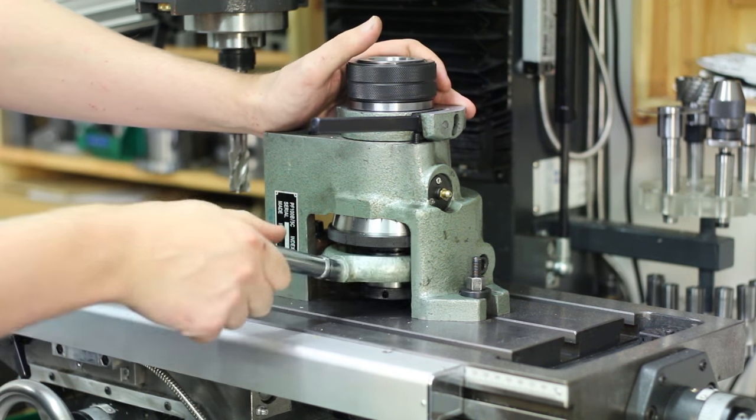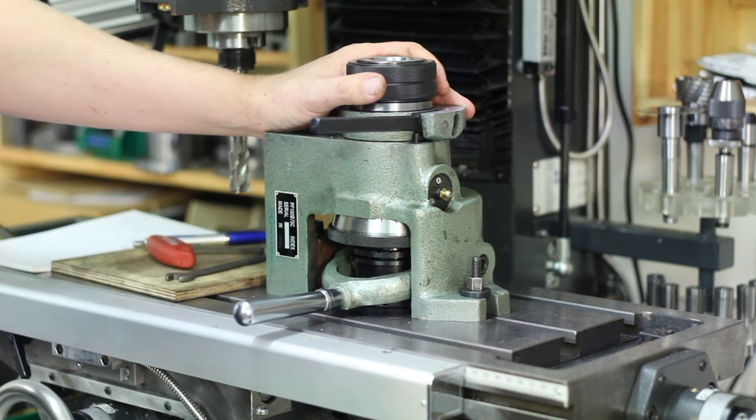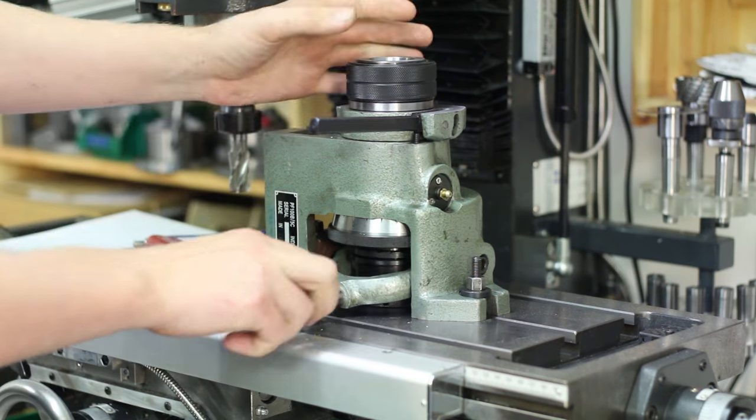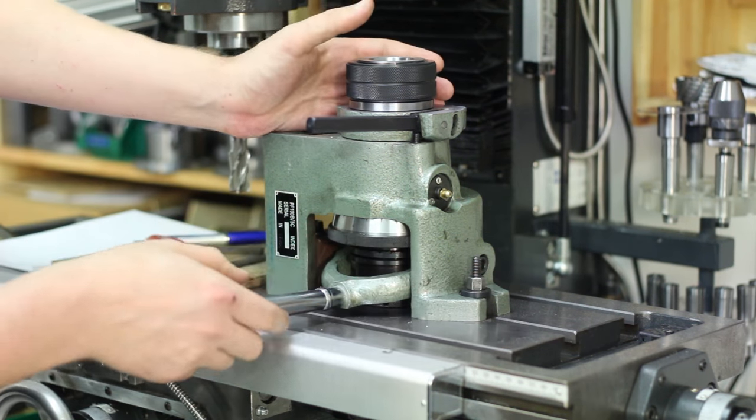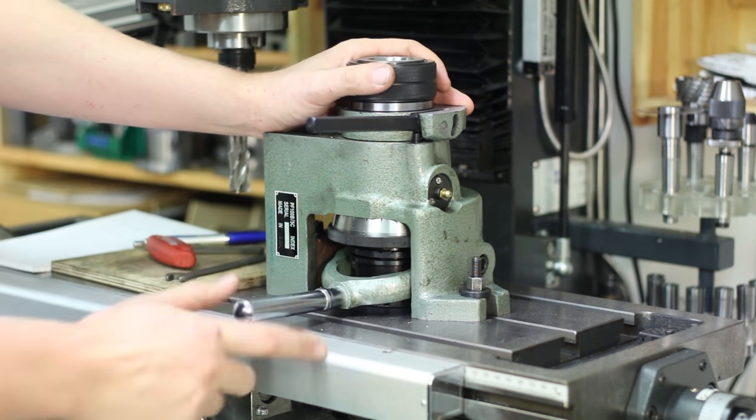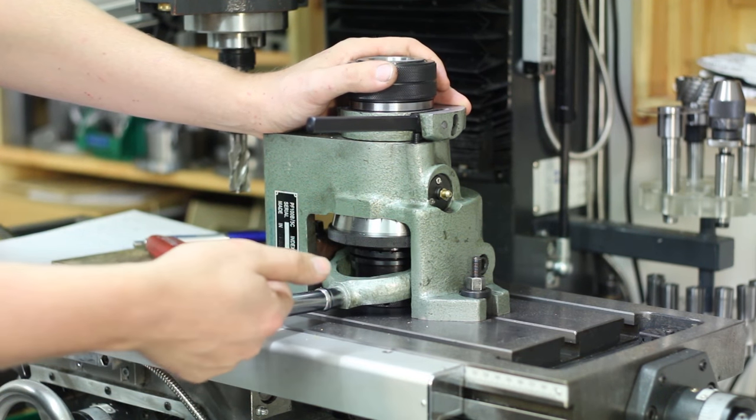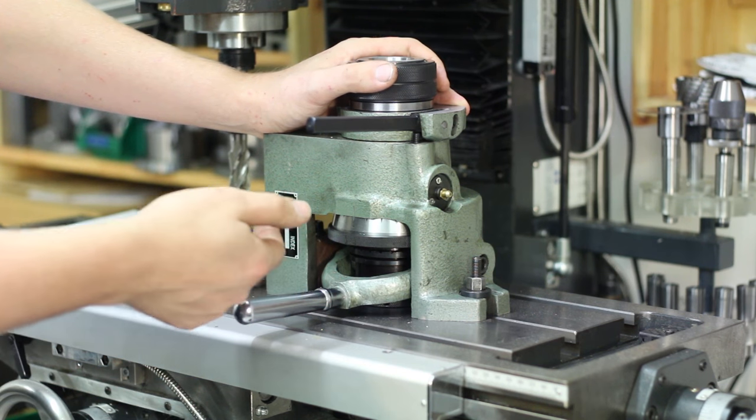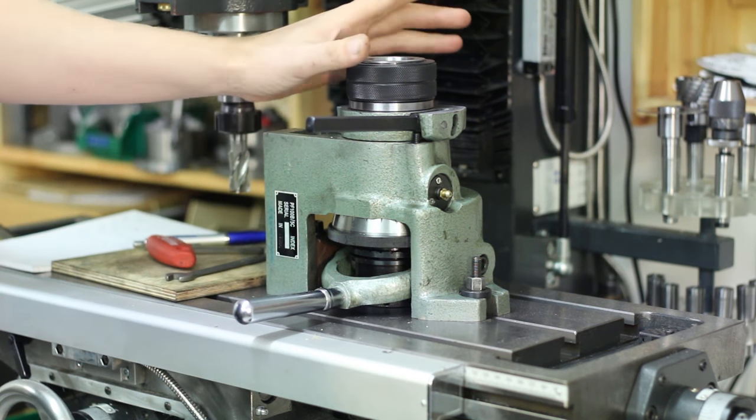The collet is clamped by this quick action lever. You screw the collet in which is a bit hard when it's in an upright position. Then you can just with this lever clamp the collet and your workpiece with it.